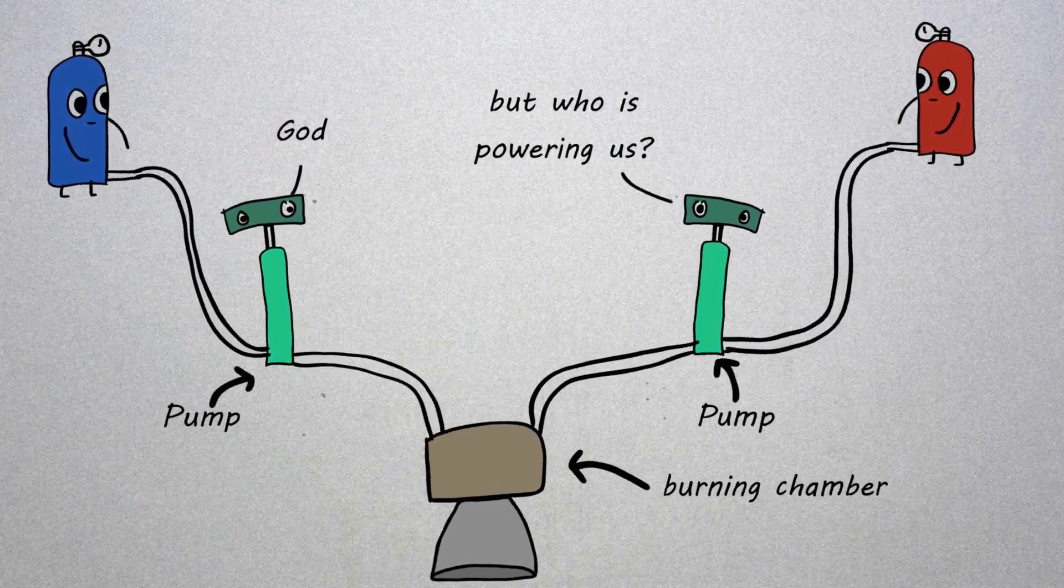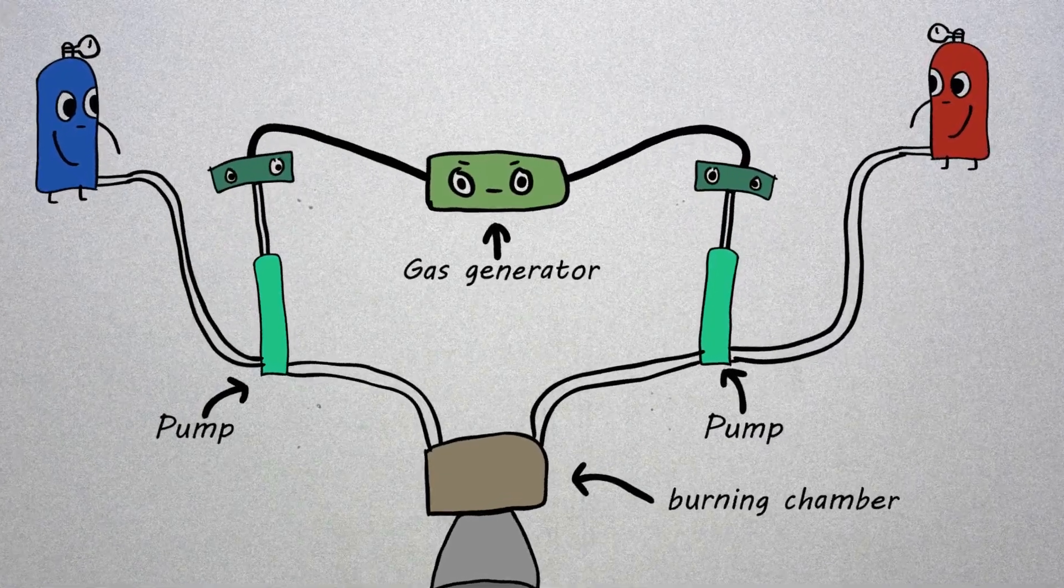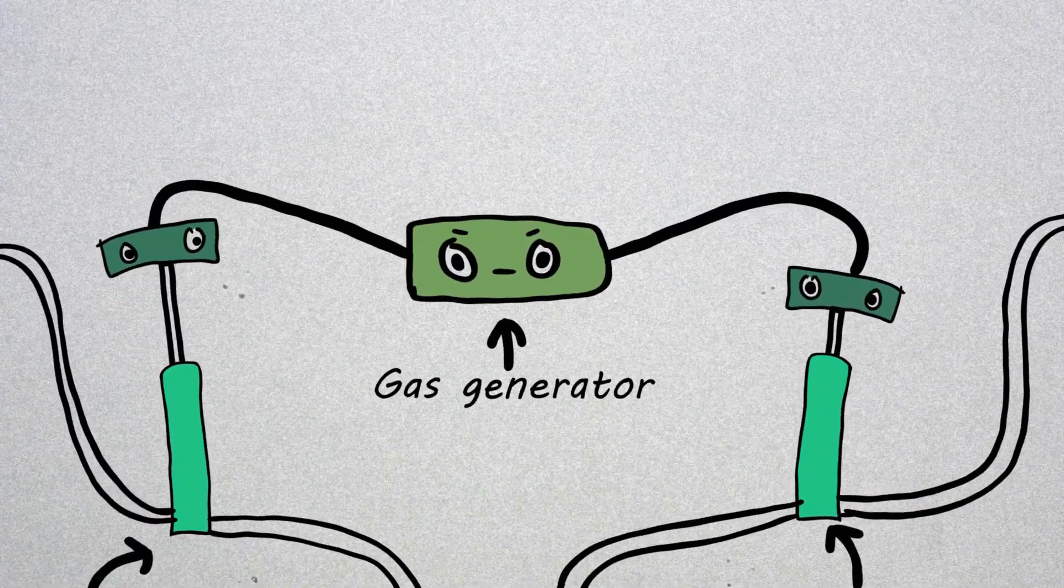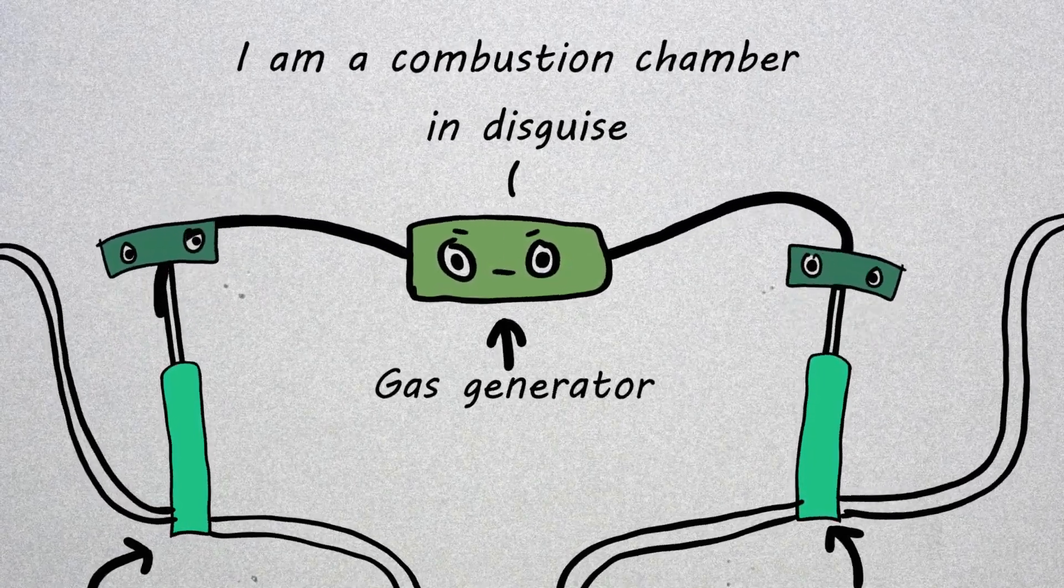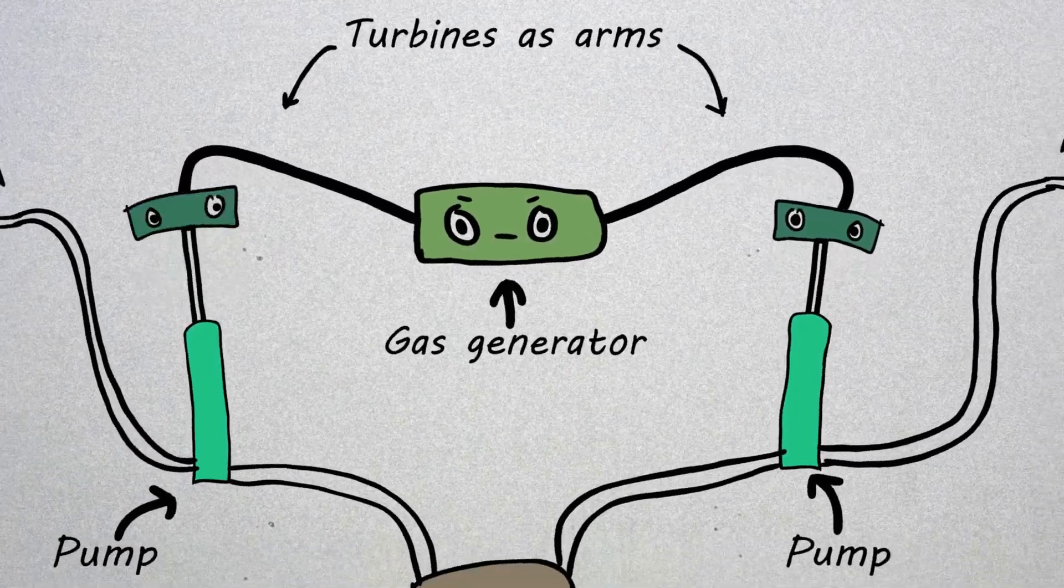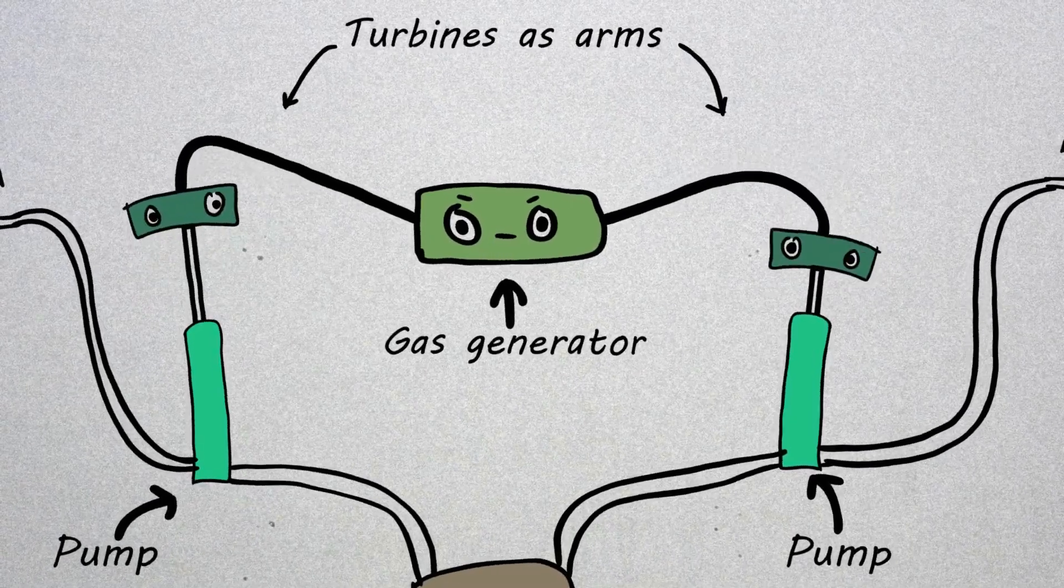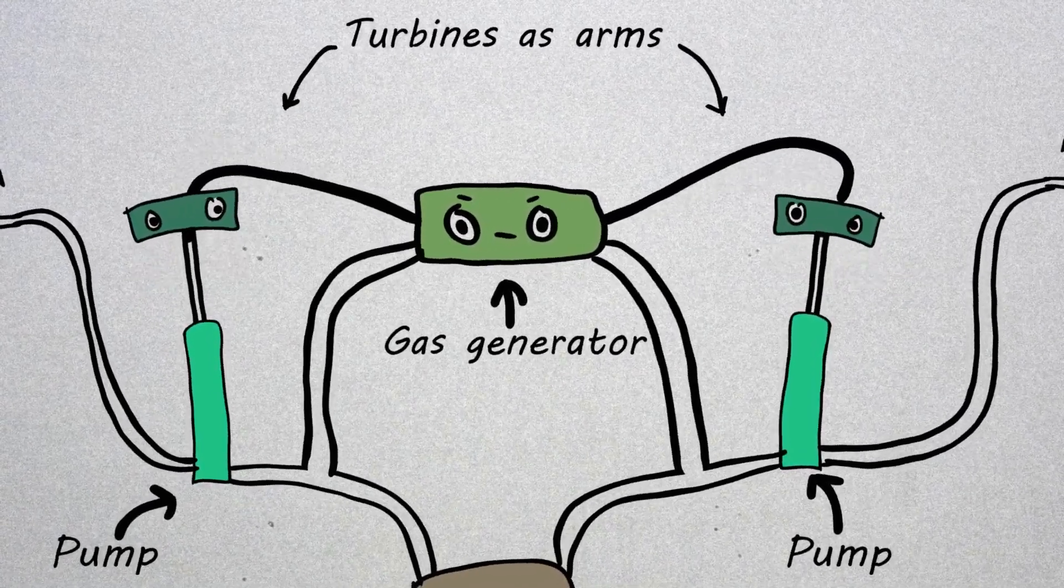The pump isn't going to run itself. It's something called a gas generator, which in itself is a small combustion chamber and does nothing except produce gas to power up the turbines, which in turn power up the pumps. So you use a certain amount of fuel stuff brought into the engine to power up the pumps.